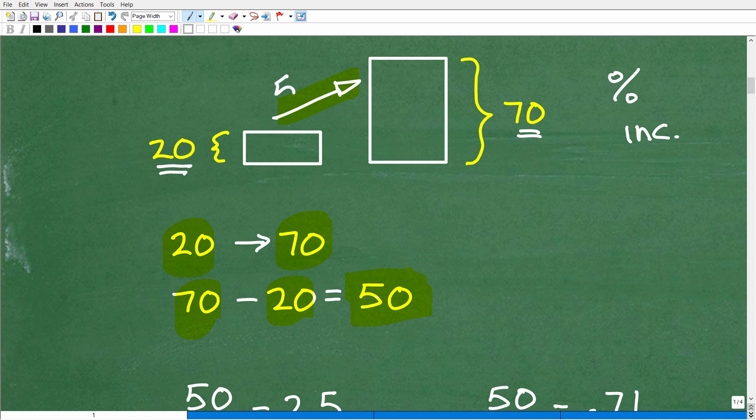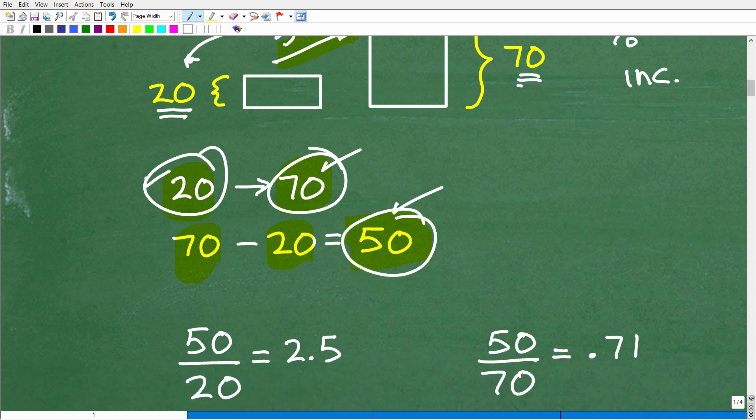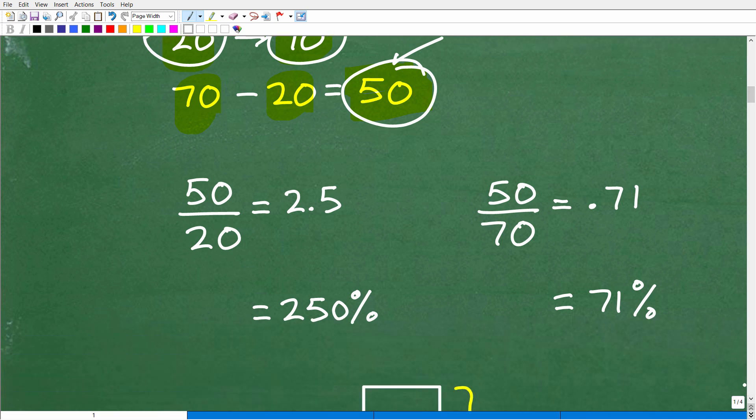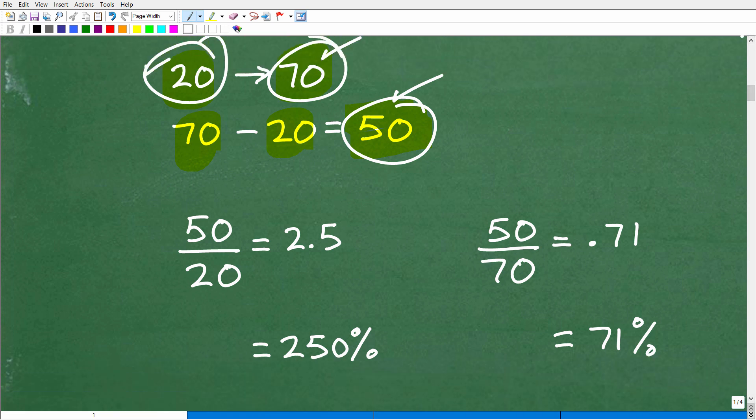We were starting from 20. We added on 50 to the 20 and we landed at 70. So we have kind of our basic numbers here. We have 20, we have 70, and we have 50. But now what do we do? Like how do we, what numbers out of the 20, the 70 and the 50, how do we kind of set this up? Well, I'm going to give you two options to look at here. And I want you to pick the right answer.